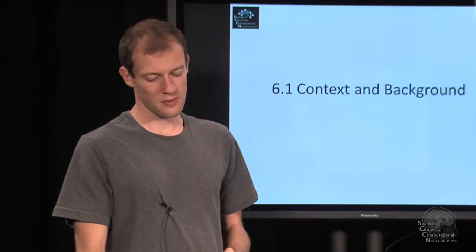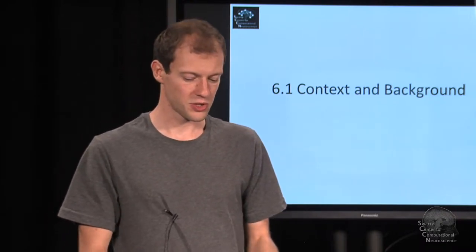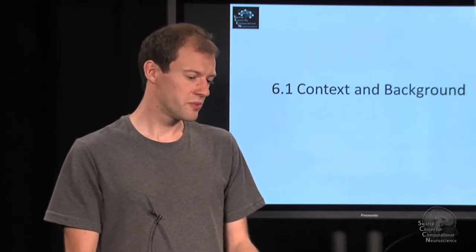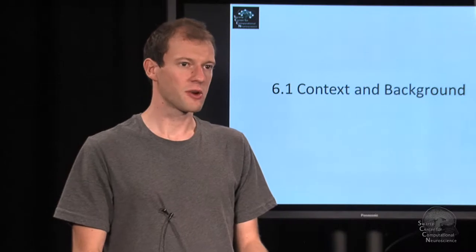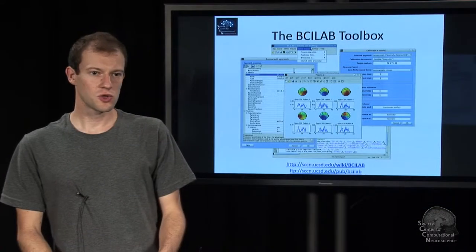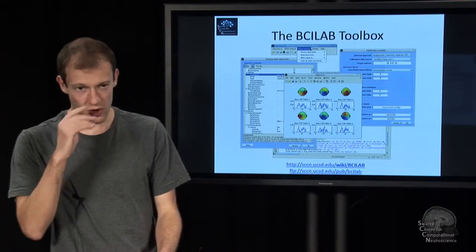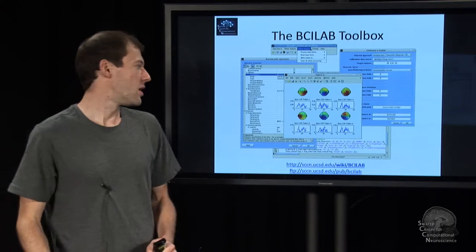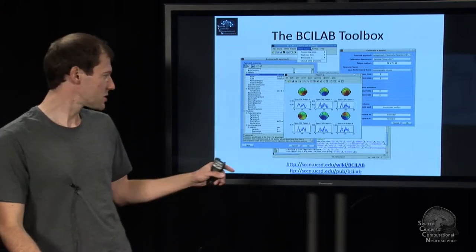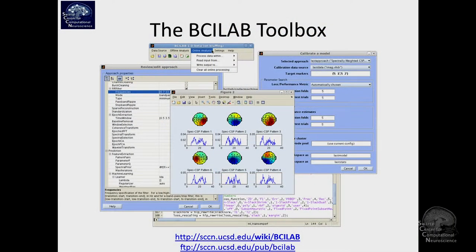The first module of this lecture is about the context and background of the BCI Lab toolbox. You can find the toolbox on the internet — it's open source. There is an FTP link at ftp.sccn.ucsd.edu/pub/bcilab, and there is also a wiki page. You should be able to Google for this to find it as well.